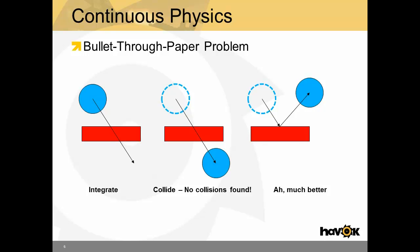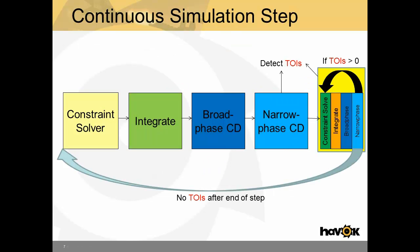HAVOC solves this through what it calls continuous physics. In continuous physics, objects are swept through the world. They generate what we call TOIs, or time of impact events. Time of impact events are sorted from first to last. The simulation is backtracked, the collision is registered, and then the simulation moves forward from there. The result looks something like this. In continuous simulation, the narrow phase collision detection step can generate TOIs. TOIs are then passed along to a final, sort of mini-step, which will iterate until all TOIs are solved.